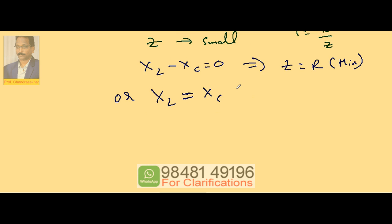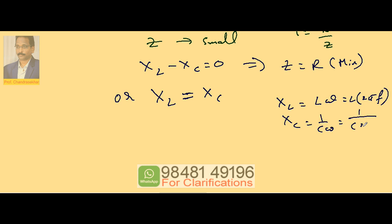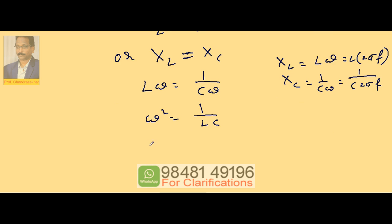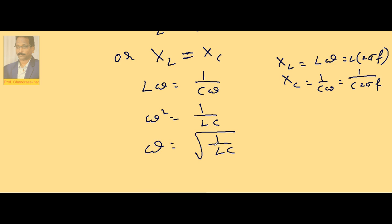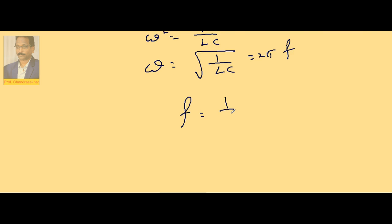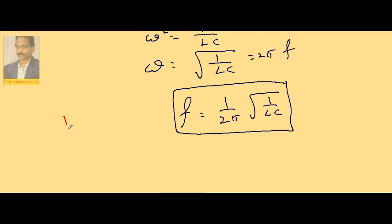As frequency increases, X_L = Lω increases while X_C = 1/(Cω) decreases. At one specific frequency, X_L = X_C. Setting Lω = 1/(Cω) gives ω² = 1/(LC), so ω = √(1/LC). Therefore, resonance frequency f = (1/2π)·√(1/LC).